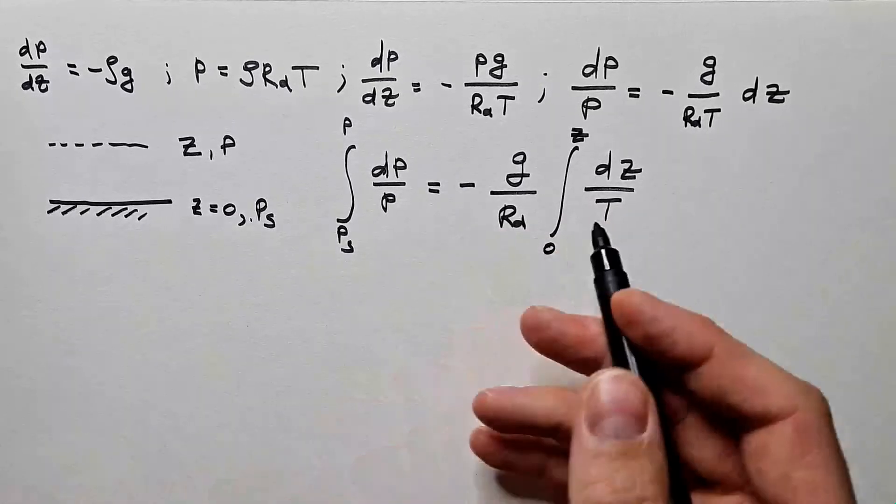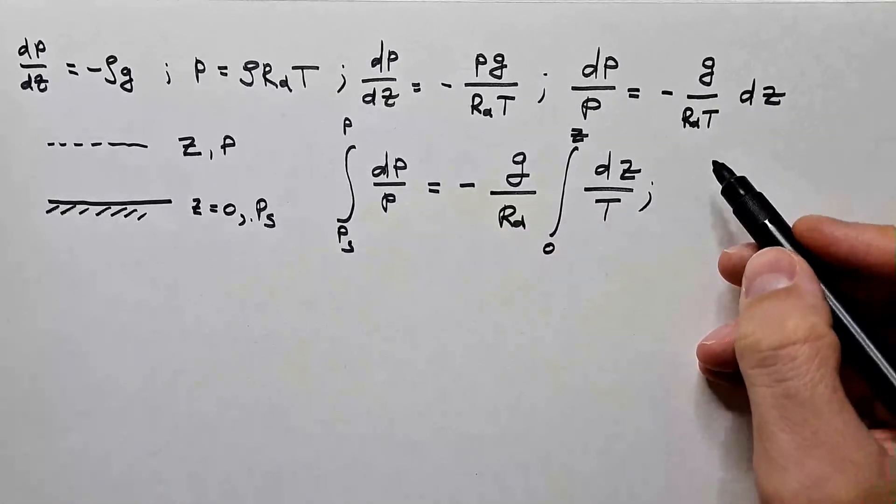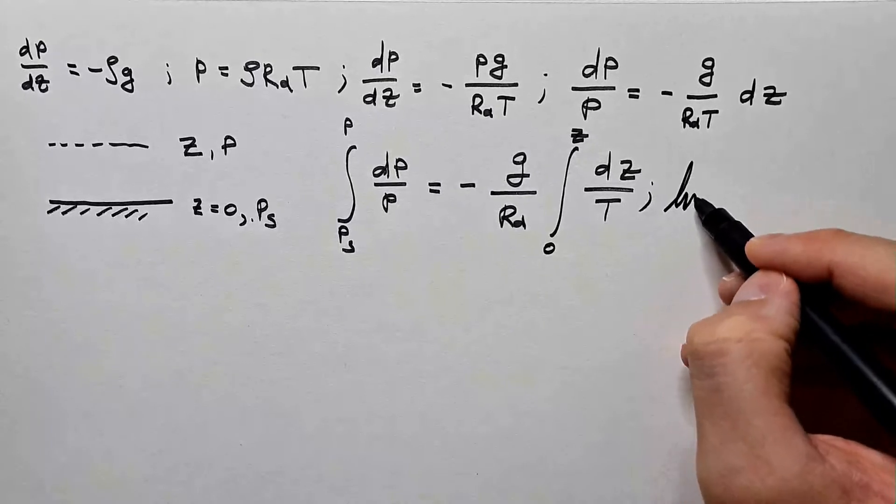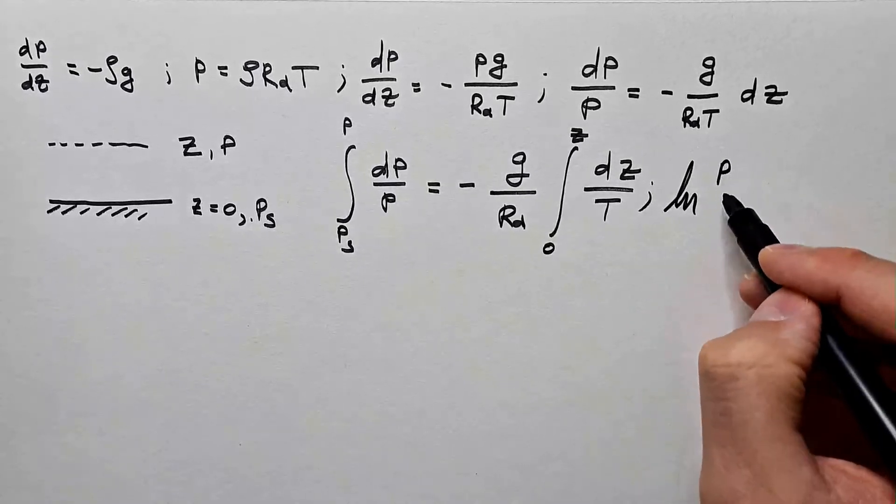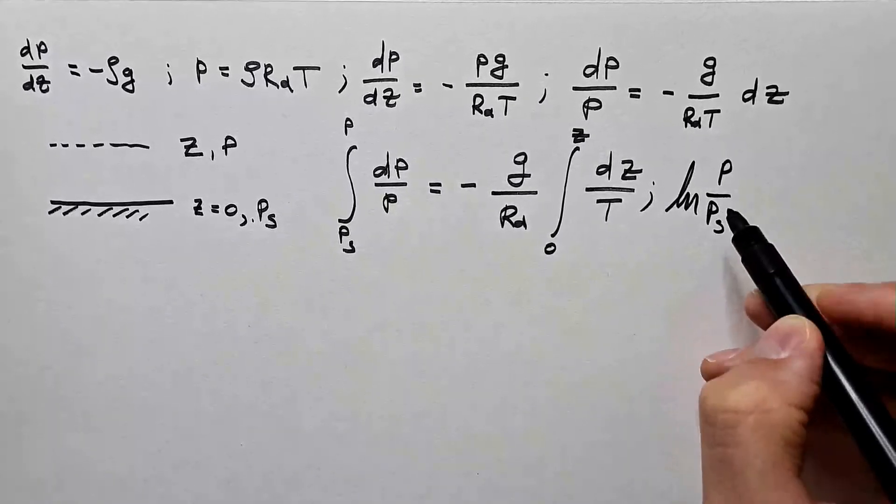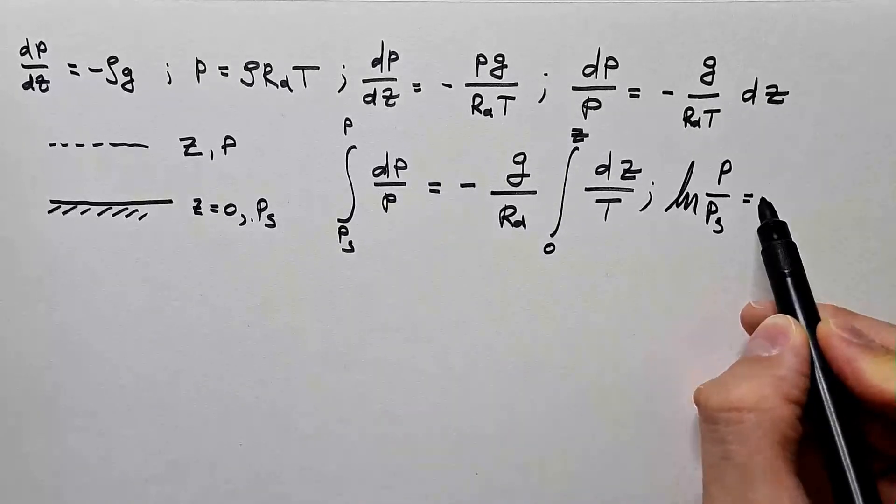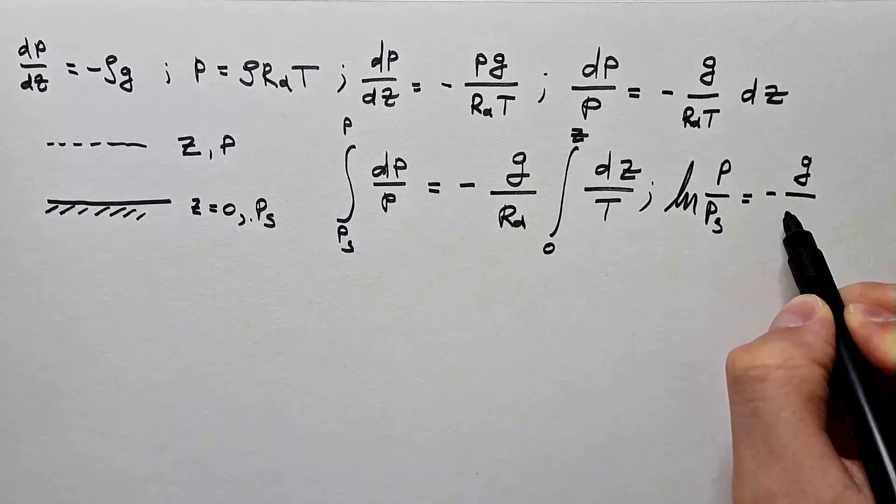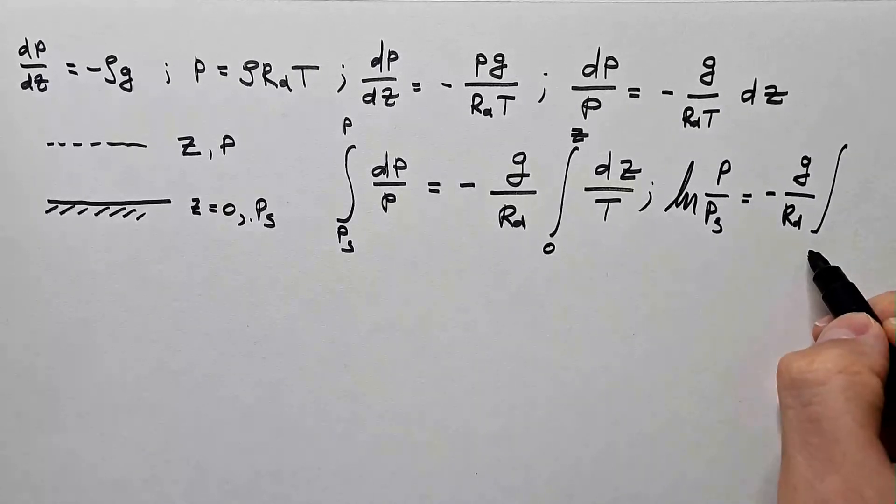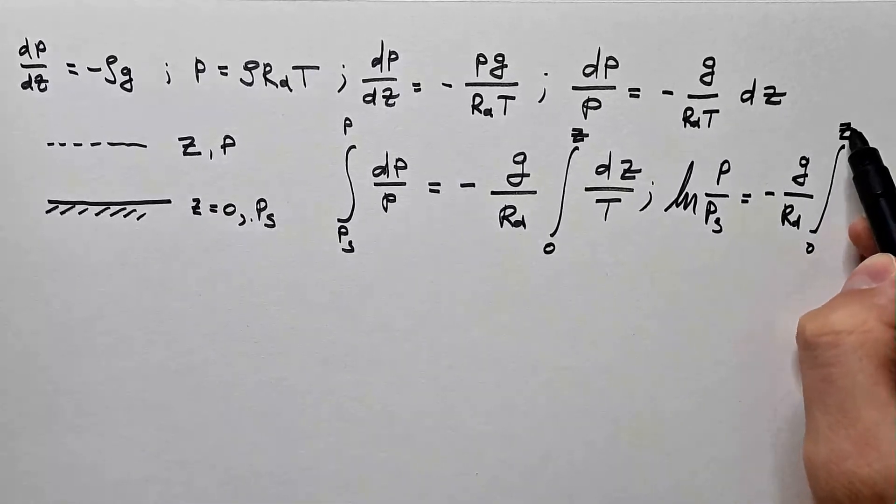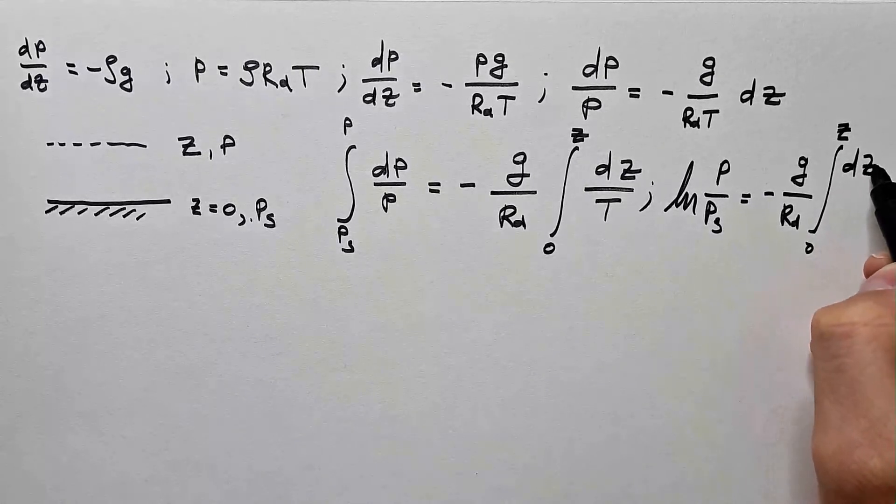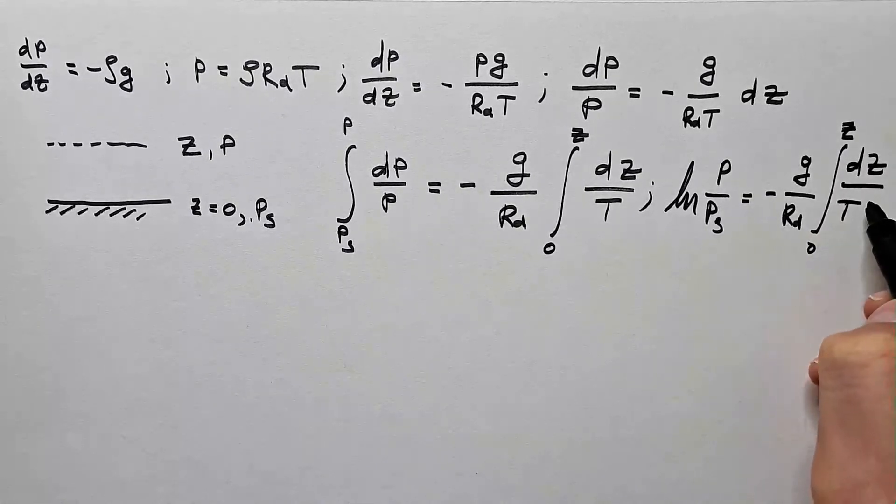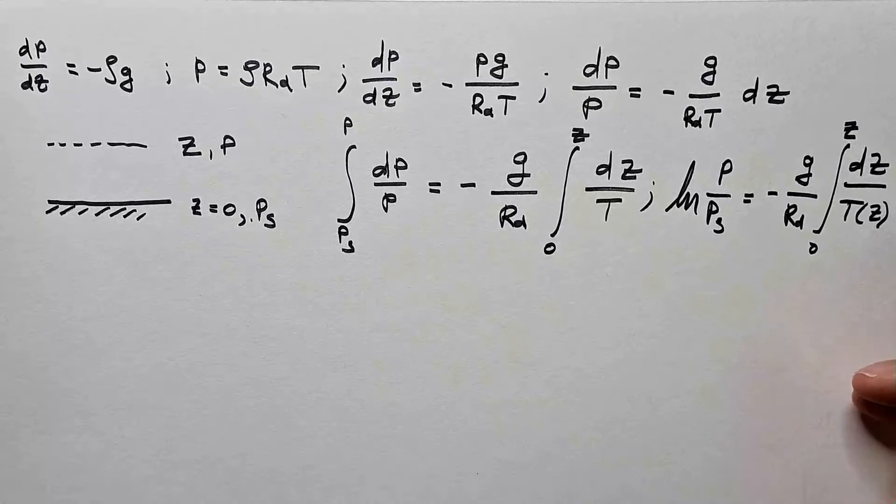Or, after solving this integral, we will get that ln p over ps, that's the left side, equals minus g over Rd integral 0 to z dz over T, and I'll put T of z.